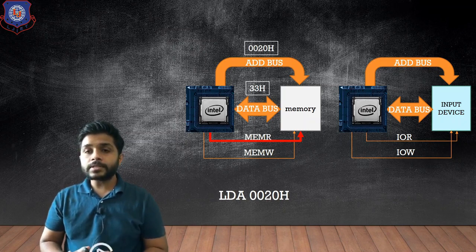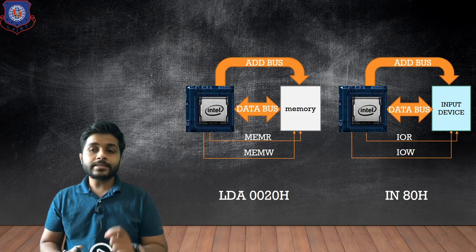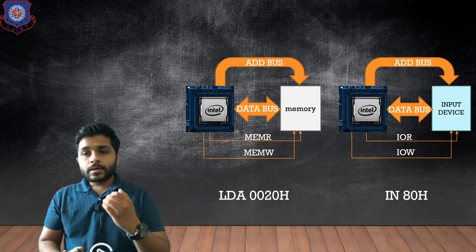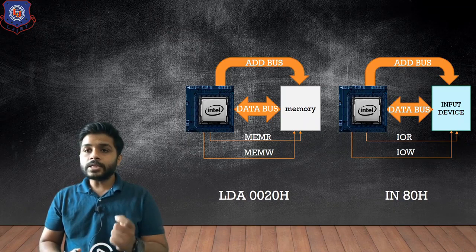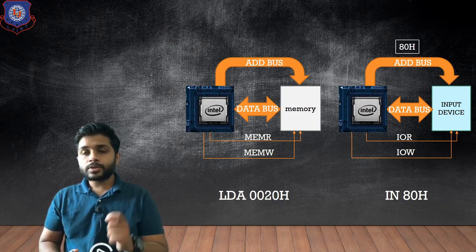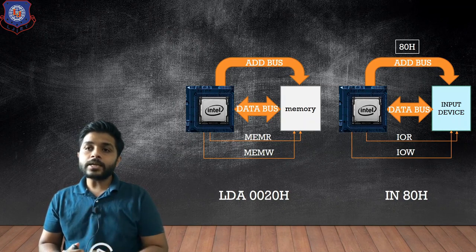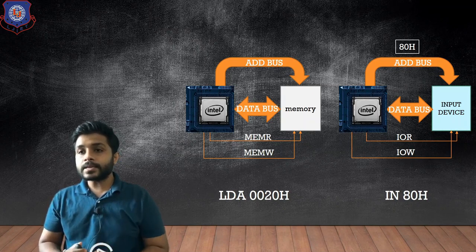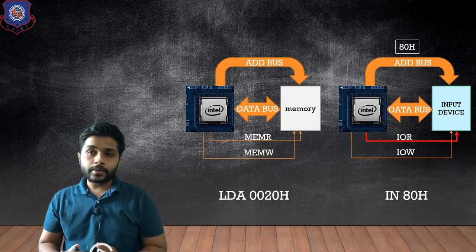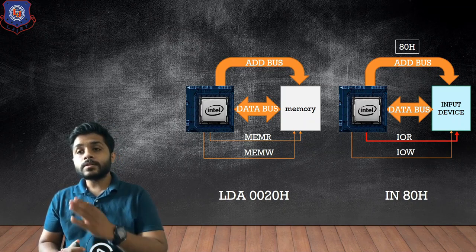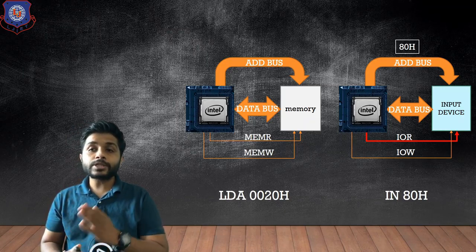Now, in the case of input/output interfacing, suppose we are executing the instruction IN ATH. The first step the microprocessor will perform is to send the port address ATH using the address bus. That particular port will be selected — you can see that the input device will be selected. After the input device is selected, the microprocessor will generate the control signal I/O read, and when the input device receives that control signal, the data will be transferred from the input device to the microprocessor using the data bus.